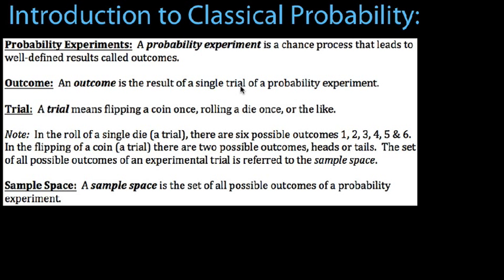We also use the word trial — it means flipping a coin once, rolling a die once, running a race once, or pulling a person from a population. In a roll of a single die there are 6 possible outcomes: 1 through 6. If we flip a coin, it might be heads — that's an outcome — or tails, that's another outcome. The set of all outcomes is called the sample space.